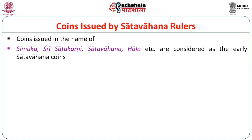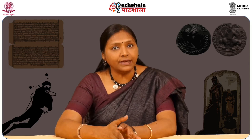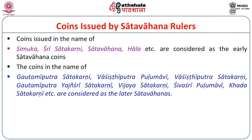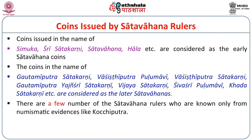There are two phases of Satavahana coinage. In the early phase we have coins of Simuka, Sri Satakarni, Satavahana, and Hala. In the second phase we have coins in the names of Gautamiputra Satakarni, Vashishtiputra Pulumavi, Vashishtiputra Satakarni, Gautamiputra Yajya Satakarni, Vijaya Satakarni, Shivasri Pulumavi, and Khadak Satakarni. There are also a few coins of rulers not known from other sources — like Gochiputra — who may or may not be Satavahanas.